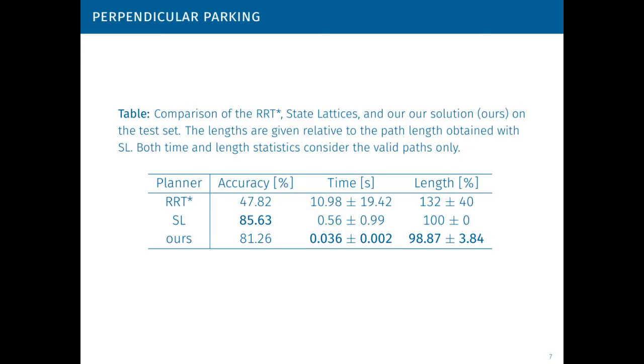Now I will present some computational experiments which confirm the effectiveness of the proposed approach. Firstly, let's see how our method compares to popular planning algorithms. It is faster than others by an order of magnitude, produces on average the shortest paths, and is slightly behind the state lattices in terms of accuracy. It is important to notice that paths which generation took more than 60 seconds were considered invalid.